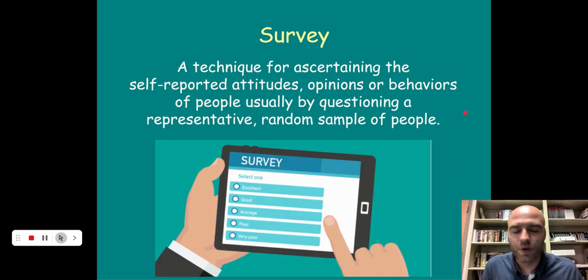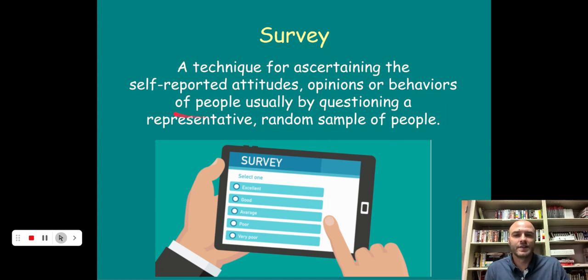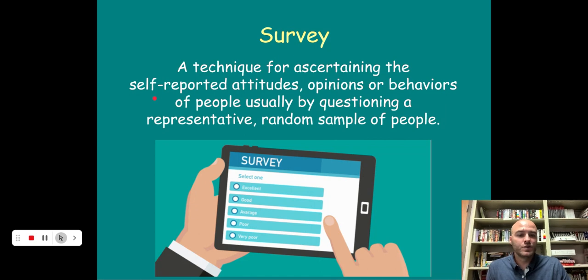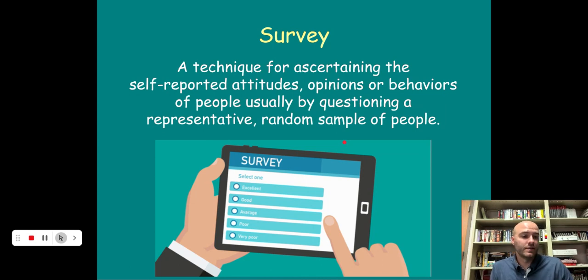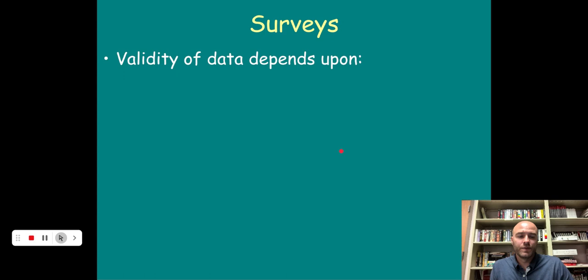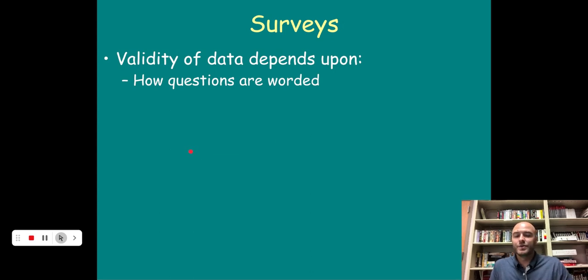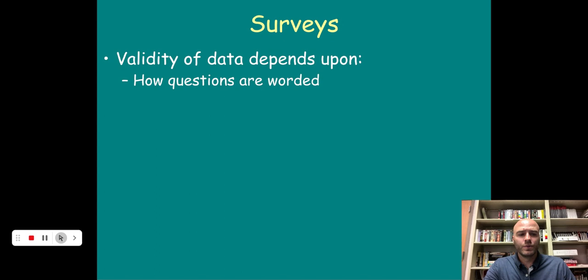And our last thing is a survey. We're all familiar with surveys. They're a technique for ascertaining self-reported attitudes, opinions, or behaviors of people, usually by questioning a representative random sample of people. So a lot of times a method of gathering information or in an experimental group to gather attitudes or impacts of the treatment, they might use a survey. But surveys could also be used in case studies. They could also be used in correlational studies. So surveys are a pretty versatile tool that researchers have to gather information from people. So the validity of survey data has a few caveats. It depends on how questions are worded. The researchers can manipulate their questions to get the answers they want. So you have to be careful to make sure you're not having any bias in the way your questions are worded.